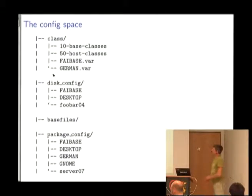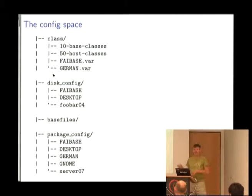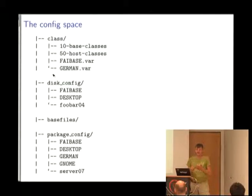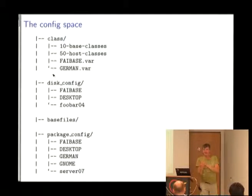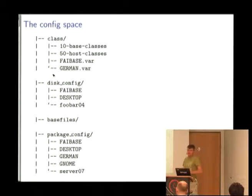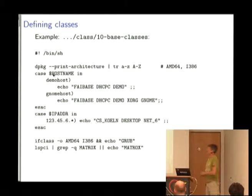Here are some subdirectories. The class directory contains files which are executed to define classes, and the .var files are used for defining variables. The names of the files are the class names — you can just put a new file into this subdirectory, and if an install client belongs to that class it will automatically fetch this file and use it for its configuration. The same applies to the config for the partitioning part and the package config. It's just a list of package names.